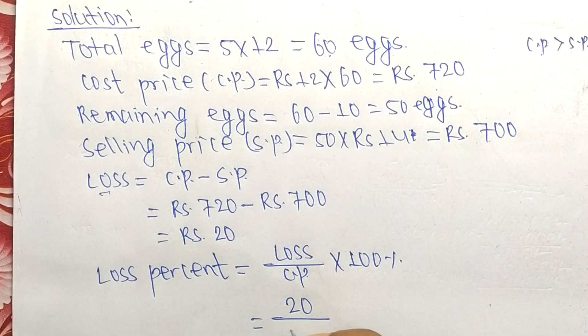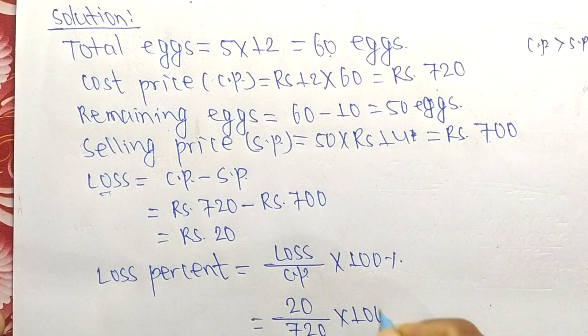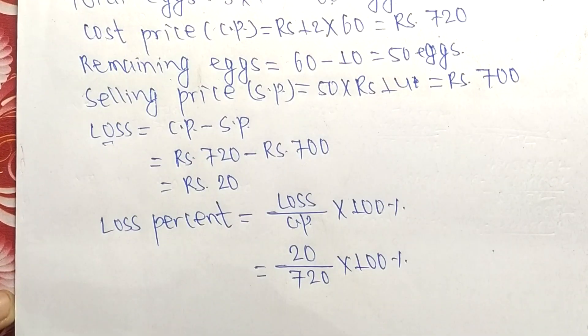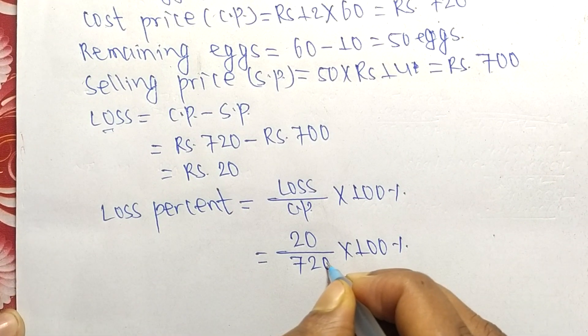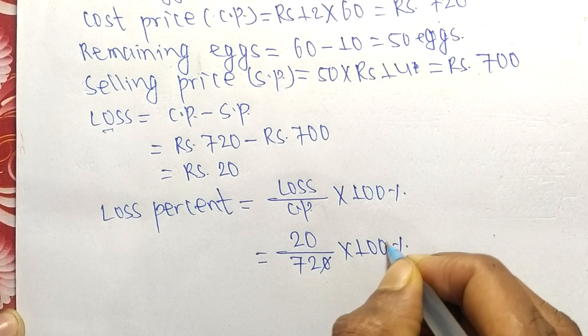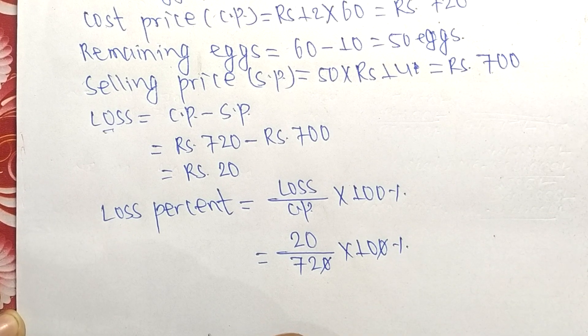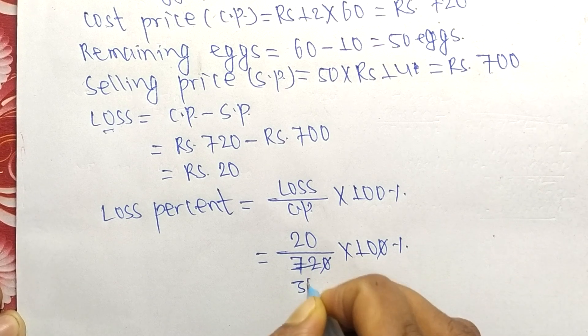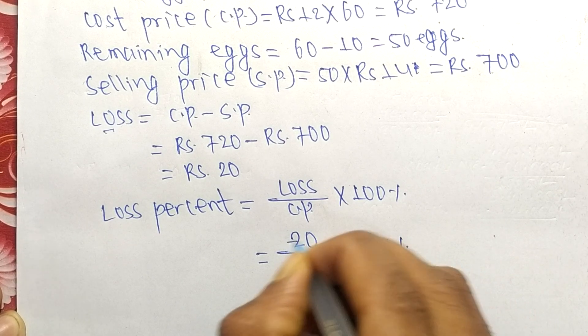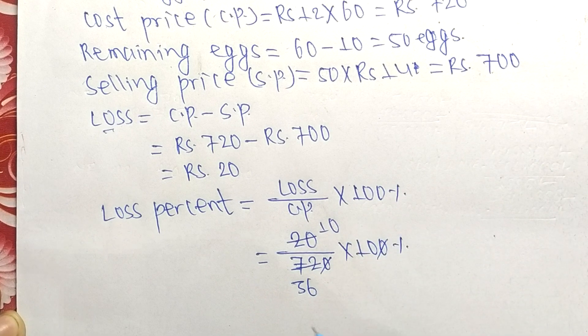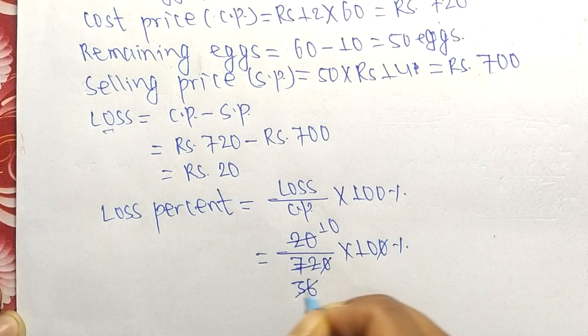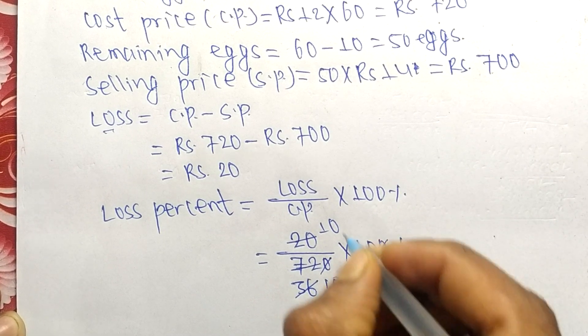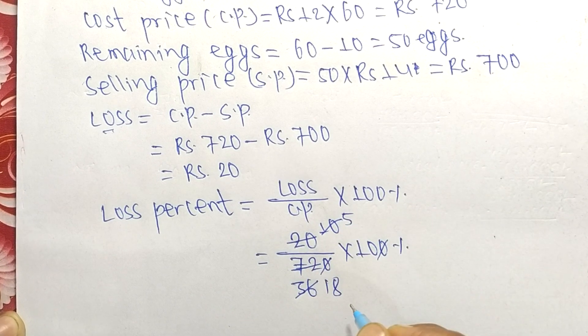So it is (20/720) × 100%. Now cancel: 2 times 36 = 72, 2 times 10 = 20. Similarly, 2 times 18 = 36, 2 times 5 = 10.